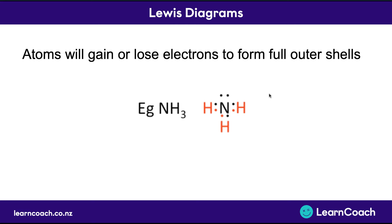A Lewis diagram is a dot diagram where we draw the dots of the outer electrons for each atom. For hydrogen, we put one dot next to it, showing there was one electron in the outer shell. We don't draw all of the electrons — we just draw the electrons in the outer shell. So for nitrogen, we didn't draw all seven electrons; we just drew the five electrons on the outside. The goal is for hydrogen to fill up to two electrons, and for almost every other atom to fill their outer shells up to eight electrons each.